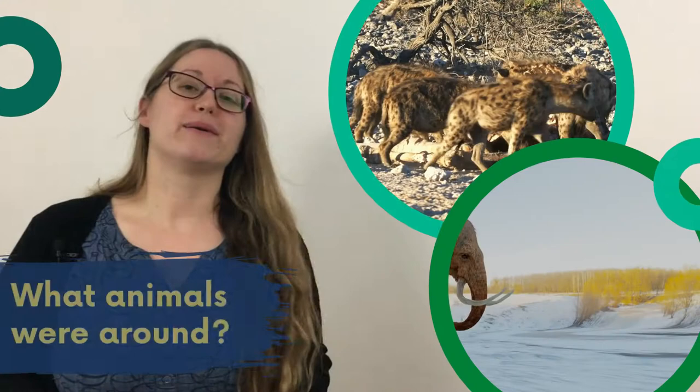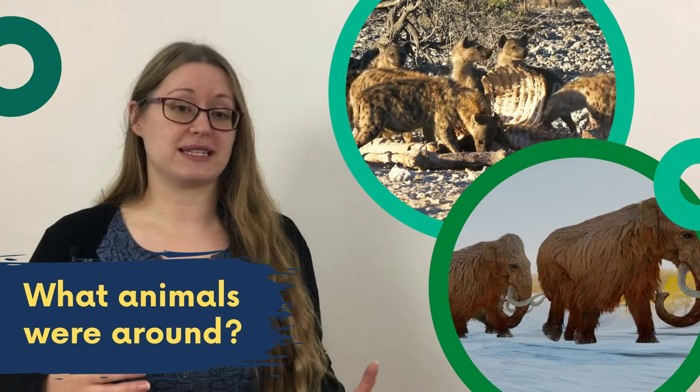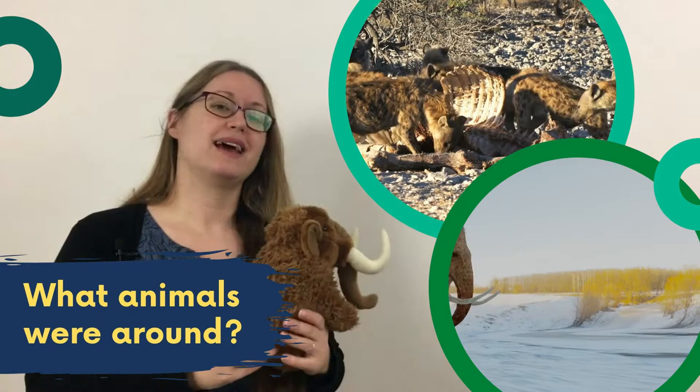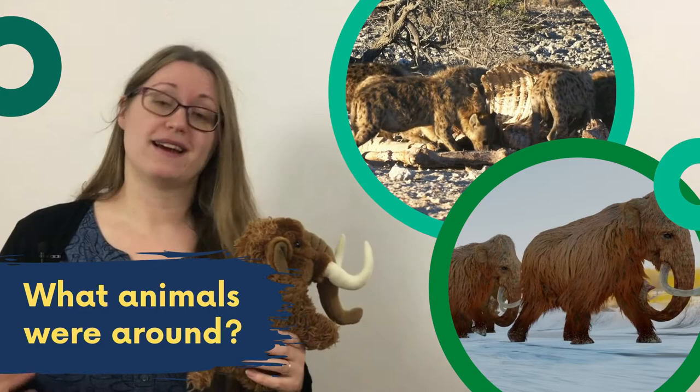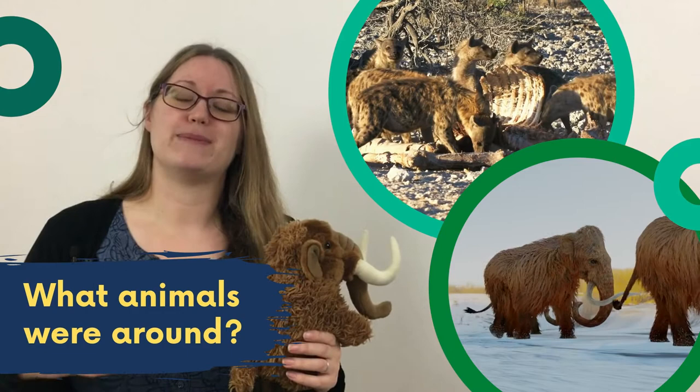We had a couple of questions about animals in the Stone Age. Isla asked how many different animal species were there in the Stone Age, and Zainab asked what animals were in the Stone Age that went extinct, and are there any that still exist today? If we include the Ice Ages, the animals in Britain changed massively according to how warm or cold the climate was. At some points, Britain was covered by snow and ice — herds of mammoths, reindeer and woolly rhinos roamed across the snow, and brown bears sheltered in caves.